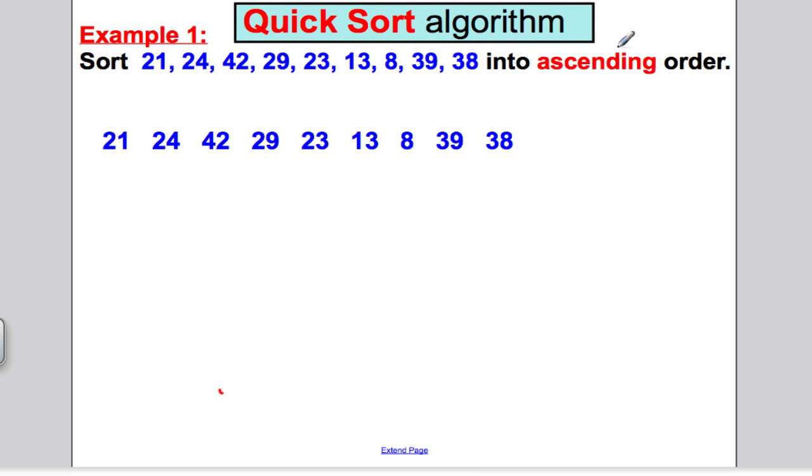Using the Quicksort algorithm, put these in ascending order. That means you're going from small to big. First thing you do, you write down the numbers. Then you count how many you've got. You've got 1, 2, 3, 4, 5, 6, 7, 8, 9. You've got nine numbers. So the middle happens in the fifth - 1, 2, 3, 4, 5, because it's an odd number. Now you're going to write down anything that's smaller than 23 in the order it comes. So 21 is, 24 is not, 42 is not, 29 is not, 13 is, 8 is, and that's it. Then the algorithm tells you to write down your pivoted number, 23.